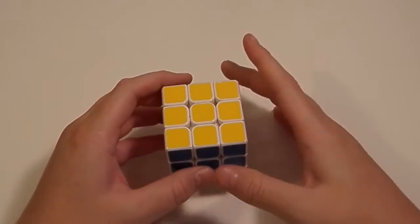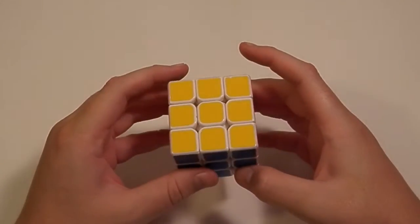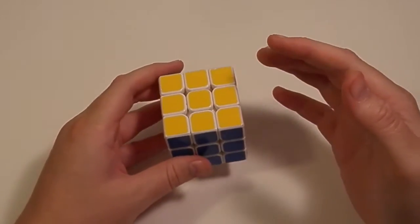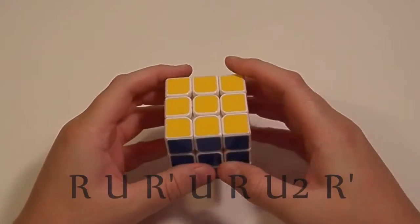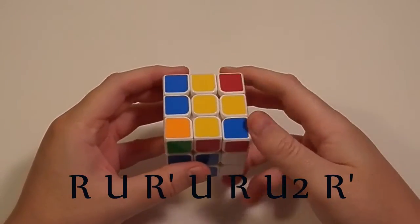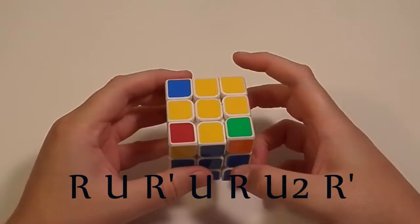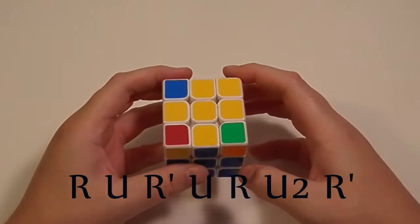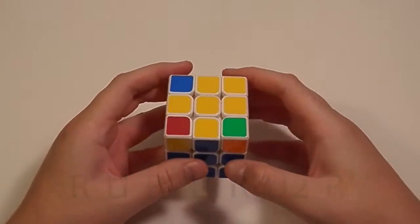For Sune, there's really only one really prevalent algorithm and I'll put that down here on the bottom of the screen for you. That is R U R' U R U2 R'. And that gives you the Anti-Sune case.